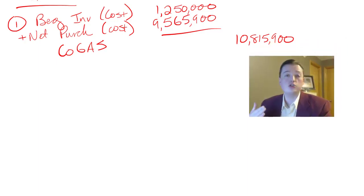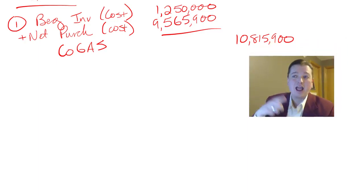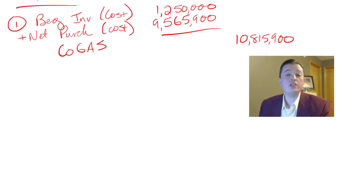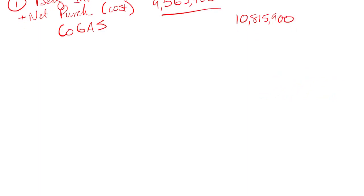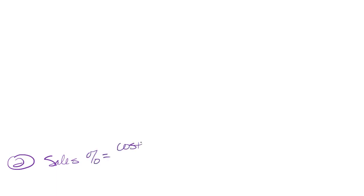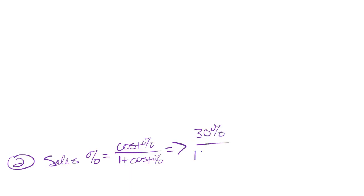The sales markup equals the cost markup divided by 1 plus the cost markup. The cost markup was 30%, so: 0.3 divided by 1.3, which gives us approximately 23%. Now I can finish the table. Sales were $11,750,000, and I subtract gross profit. To find gross profit, I multiply $11,750,000 by 23%, giving a gross profit of $2,702,500.